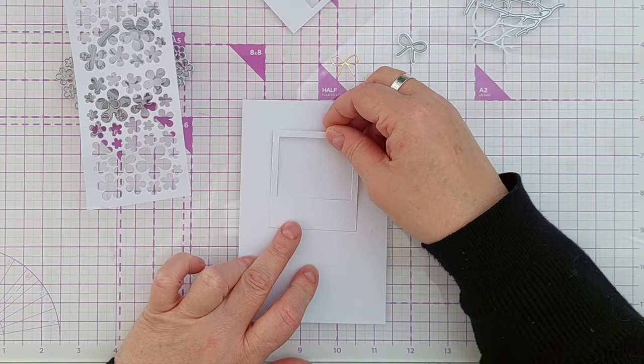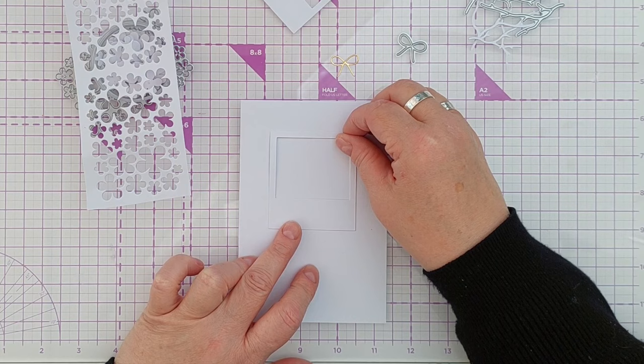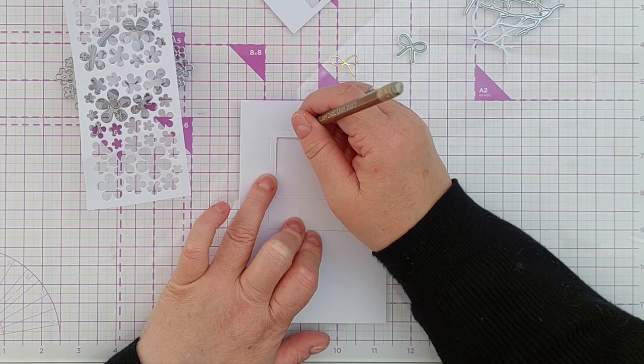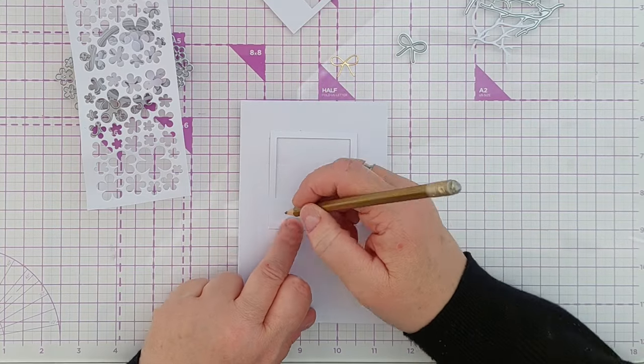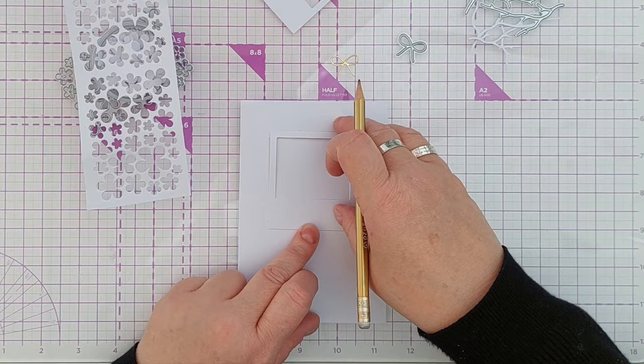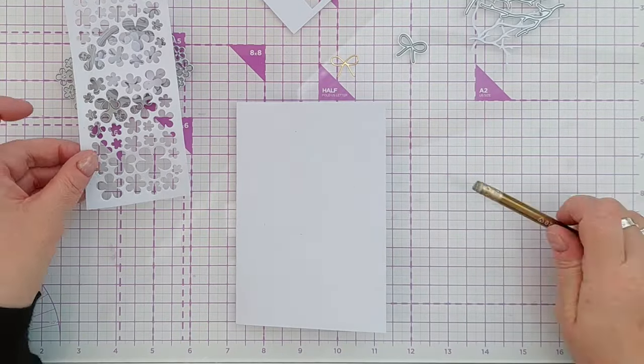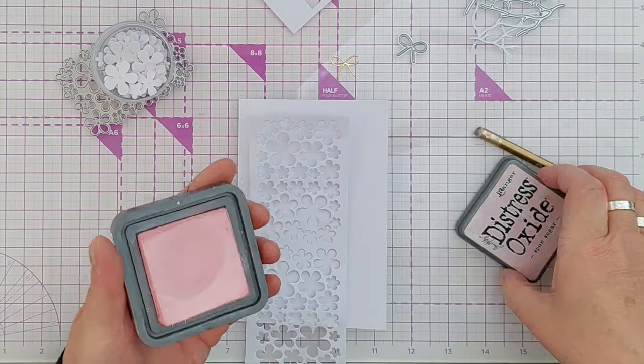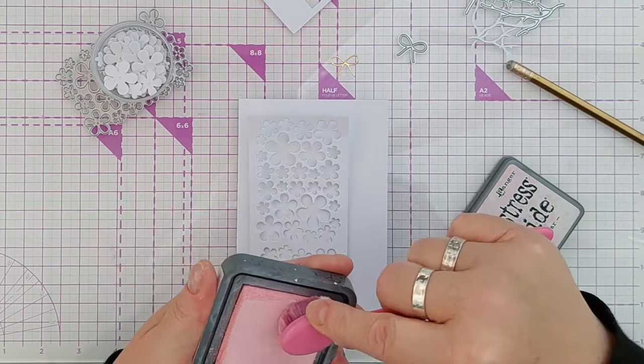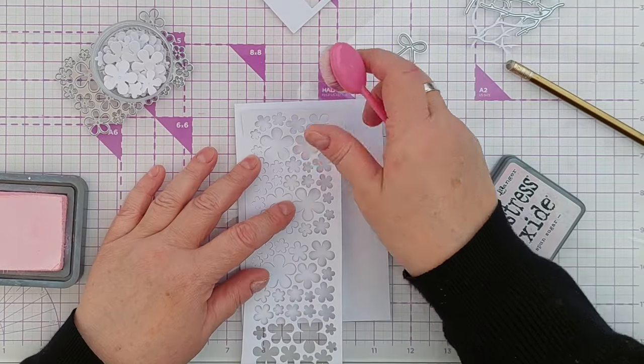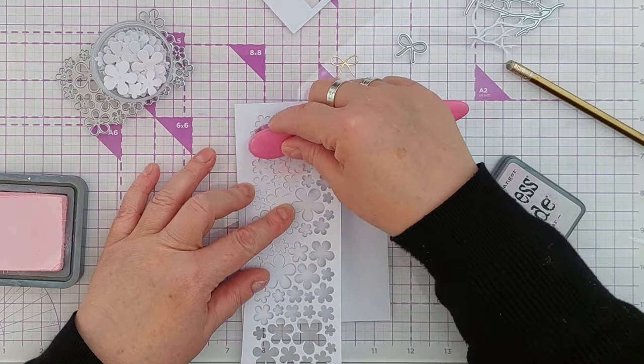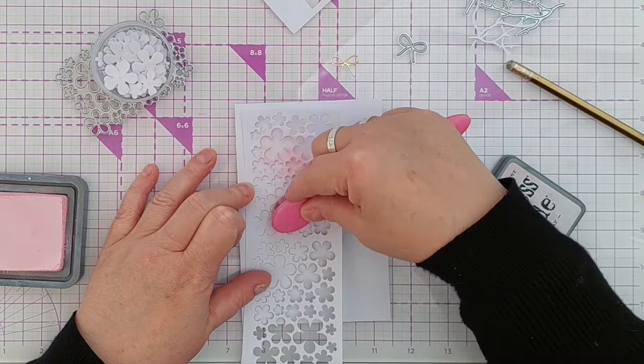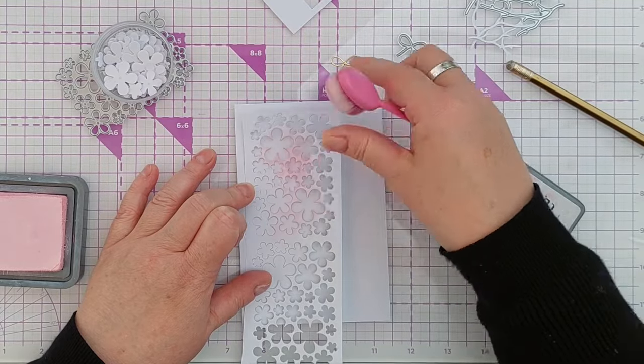So I'm thinking my polaroid frame is going to go about there. I'm going to mark very lightly just so I can see roughly where it's going to go, because I'm going to do some stenciling with this in Sponge Sugar, which is a very very pale pink. And I want the stenciling to be visible through the frame and out and around the sides of the frame, but I want it to be very very subtle.